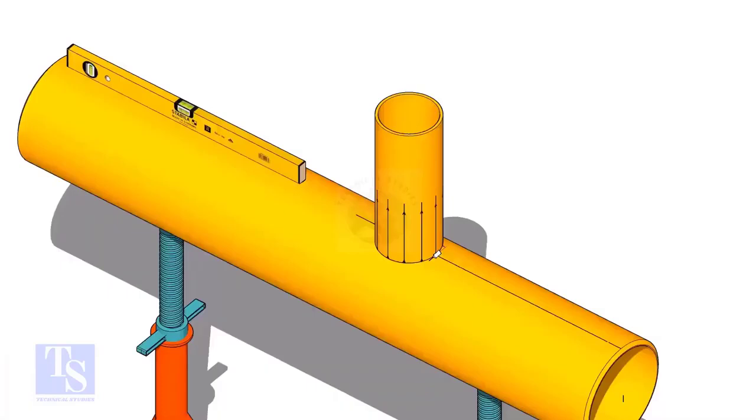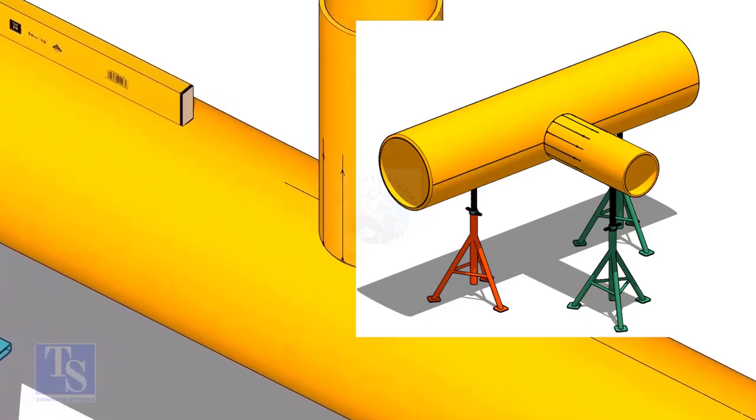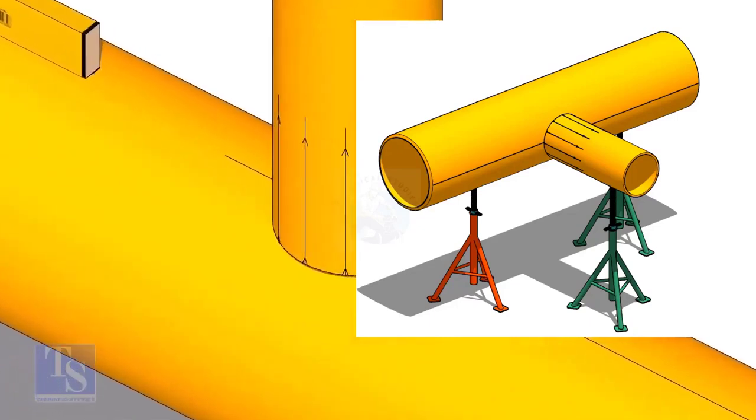Tack weld the branch on the header just to stand it vertically. If the pipes are large, you can do it in the horizontal position also.